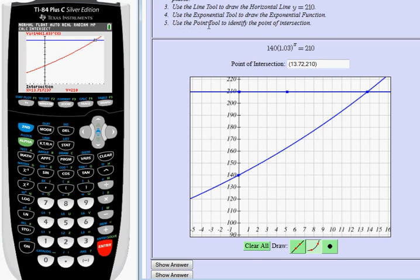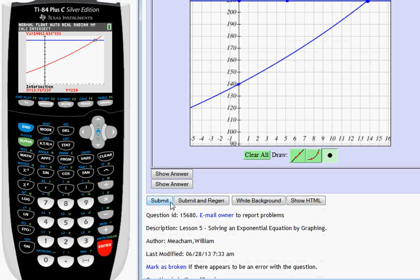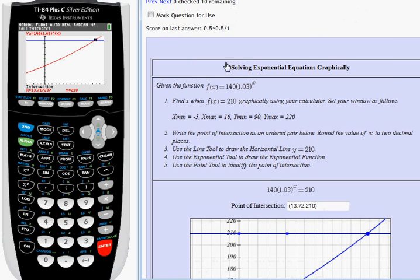Then step five says use the point tool to identify the point of intersection. Here's the point tool. So I already did it, but I'm going to actually plot a point at 13.72, comma 210, which is about right there. And I'm going to submit my answer to see if I got it correct. It says I've got point five plus point five, which is one out of one.